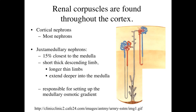The renal corpuscles are found throughout the cortex. A majority are referred to as cortical nephrons - located throughout the cortex with relatively short loops of Henle. A small proportion, about 15%, are associated with juxtamedullary nephrons - juxta meaning nearby, medullary meaning medulla. These are characterized by very deep loops of Henle extending almost all the way to the tip of the medulla, and are important for establishing the medullary osmotic gradient, which allows us to concentrate urine.